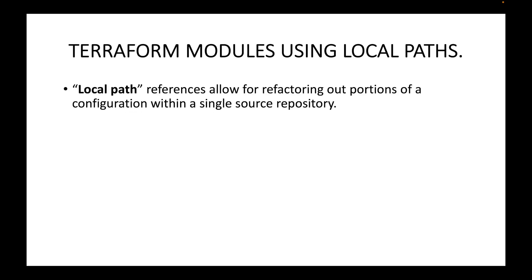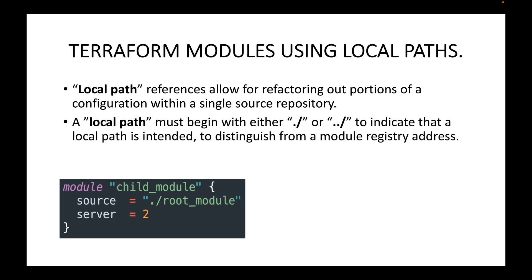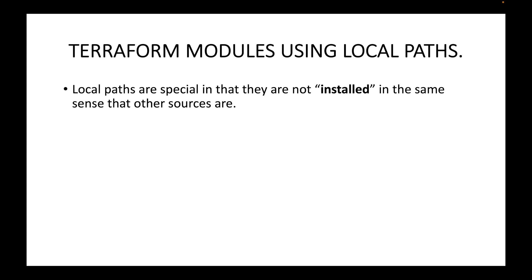In this session we will look at local paths. Local path references allow refactoring out portions of your configuration within a single source directory. A local path simply means the source code is available on the local machine itself. A local path must begin with either dot-slash (./) or dot-dot-slash (../) to indicate that a local path is intended, distinguishing it from a module registry address. Dot-slash means the source code is in the same directory; dot-dot-slash means it is one directory above.